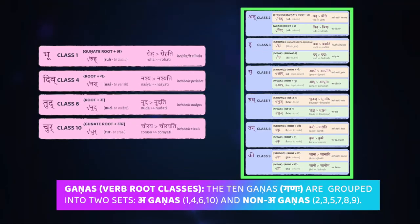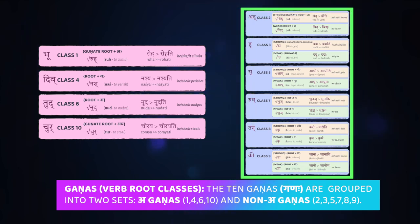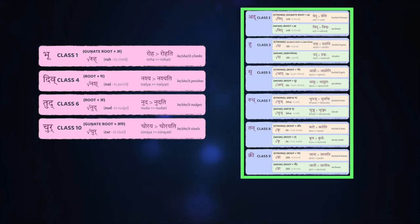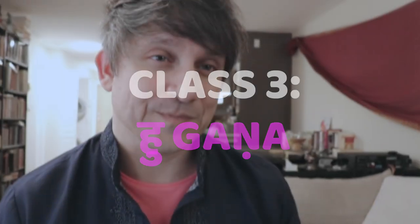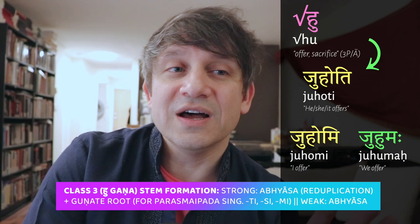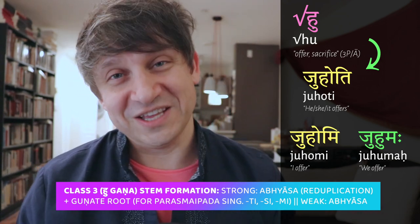Now that the easier non-ganas are out of the way, let's get down to the real business and take a careful look at some of the more challenging verb conjugations in Sanskrit. We'll be looking at the root hu, which means to offer — and especially to offer a sacrifice, a Vedic sacrifice.